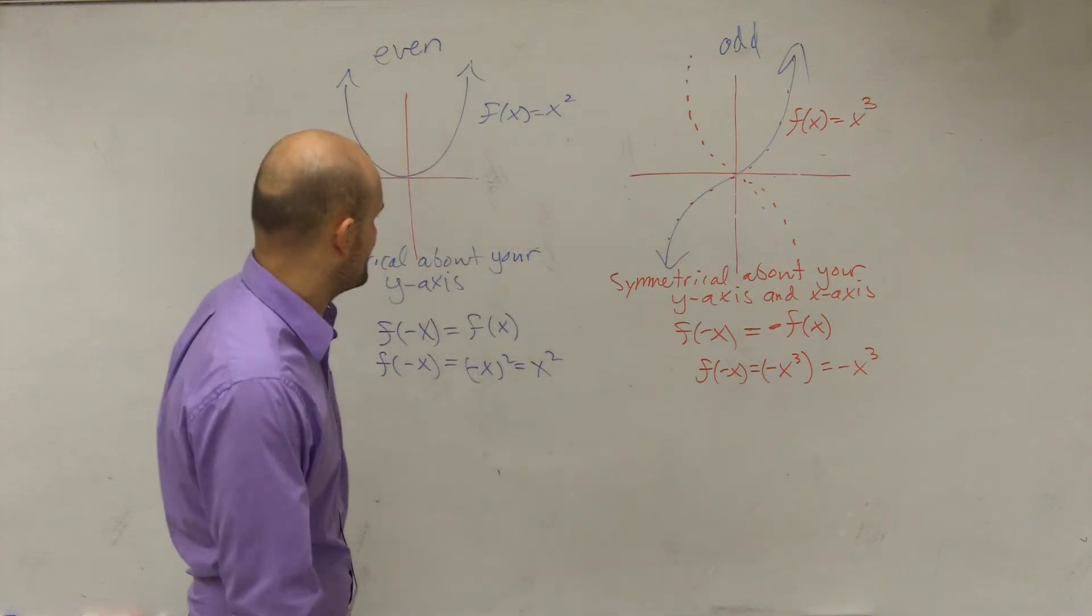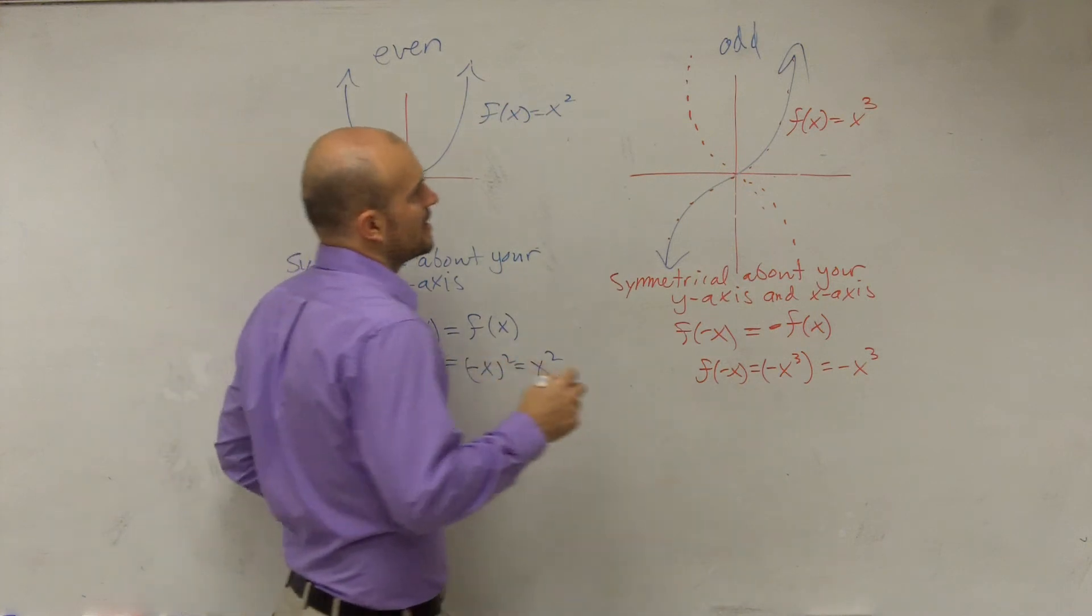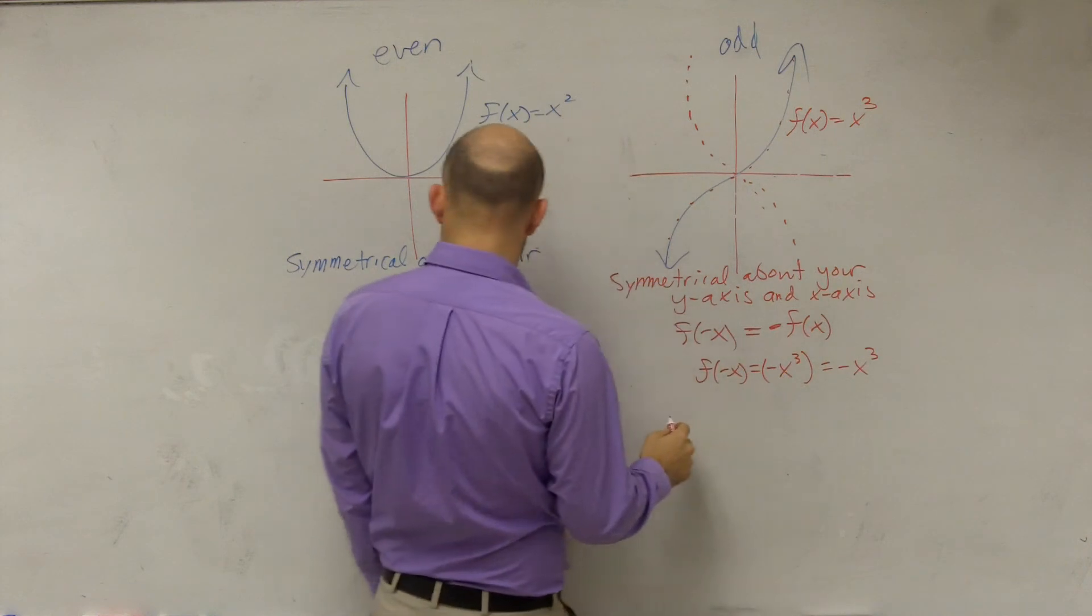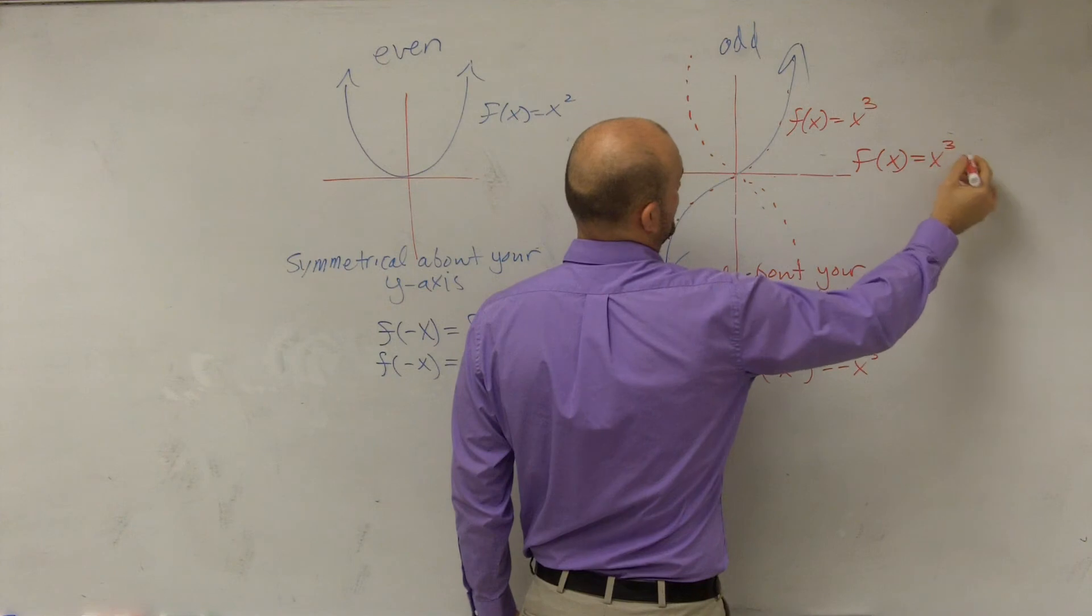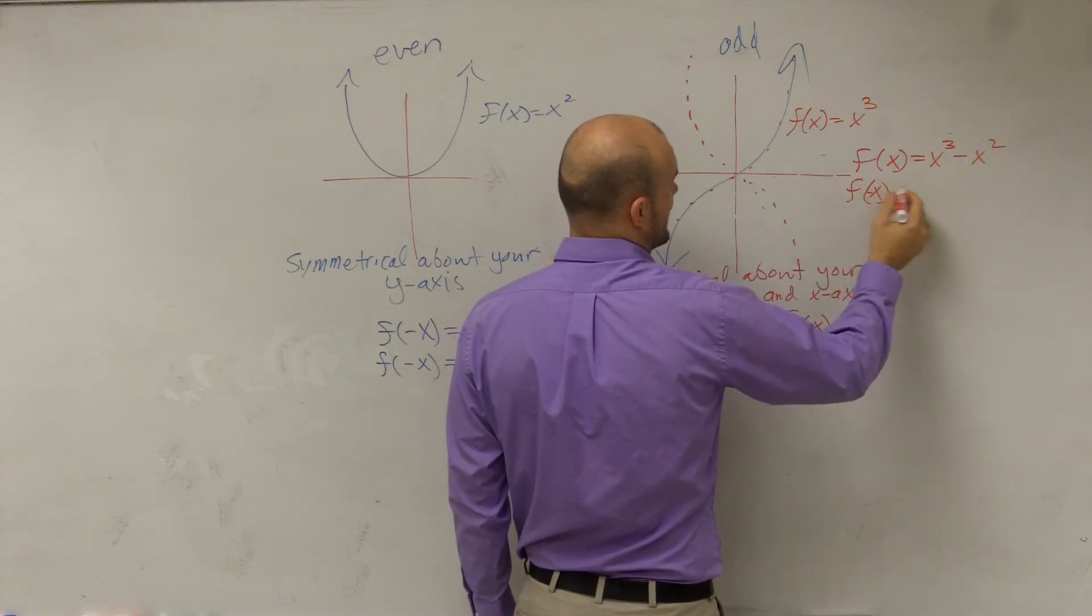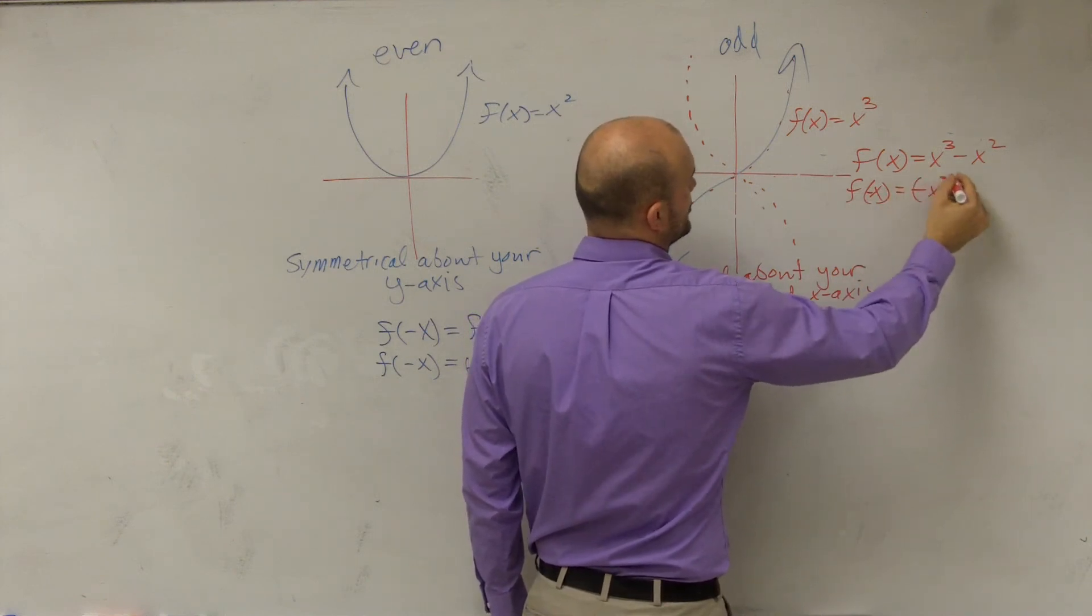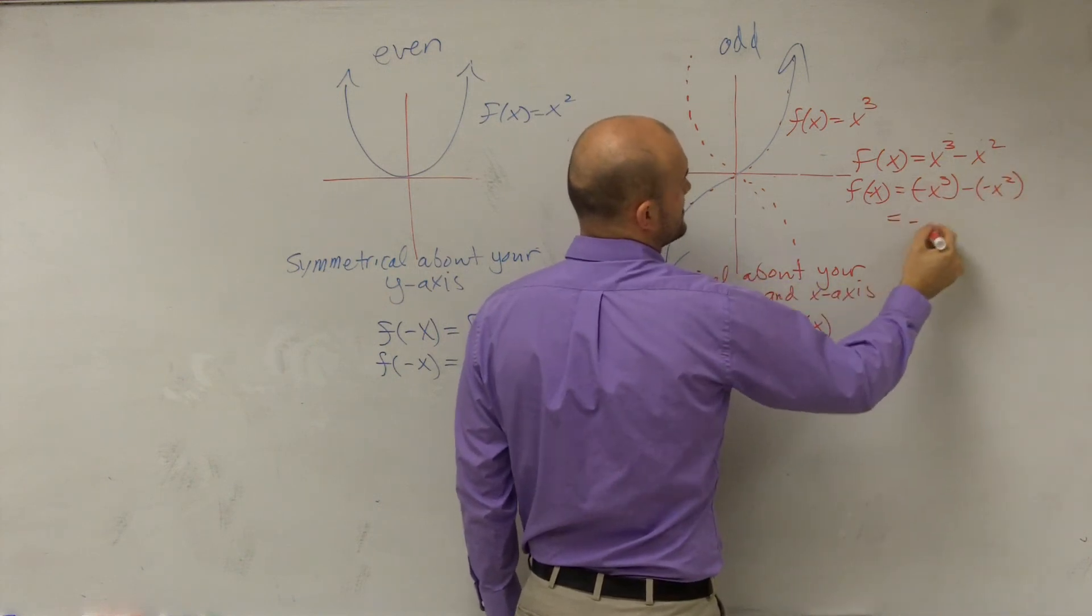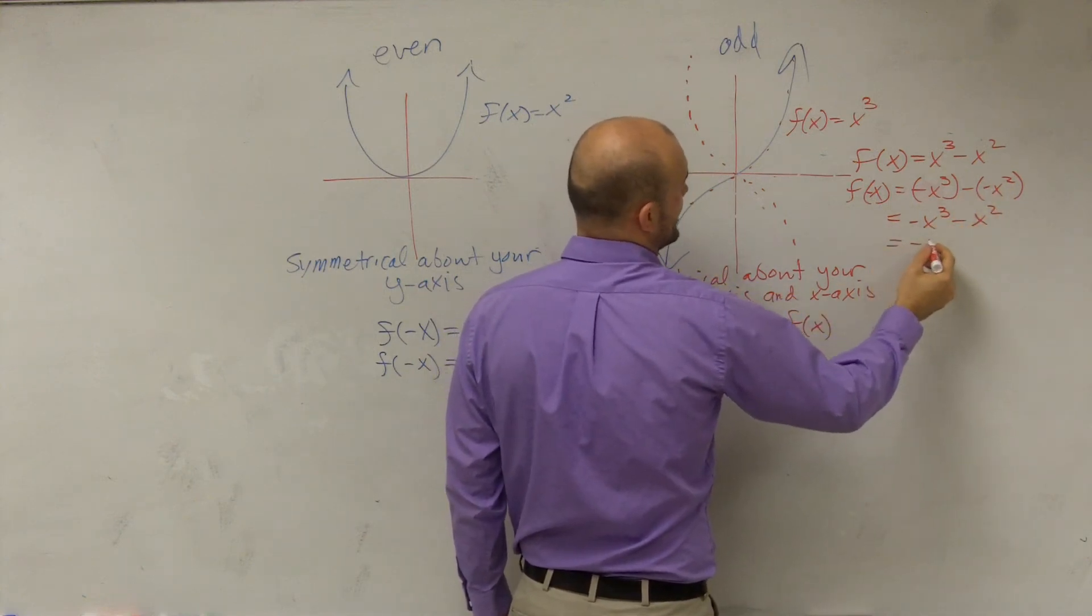Let's look at another example. Let's try f of x equals x cubed minus x squared. So if I did f of negative x, I would get negative x cubed minus a negative x squared, right? Which gives me negative x cubed, that's a positive, minus x squared. When I factor out a negative, I get x cubed plus x squared.